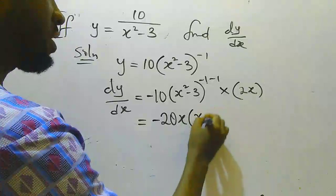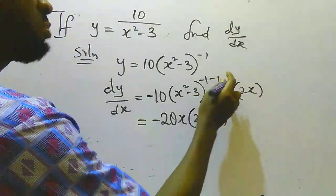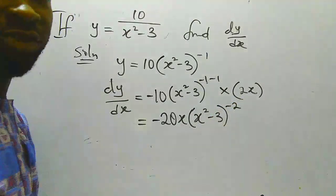And then we have x squared minus 3 to the power of minus 1 minus 1, that gives me minus 2.